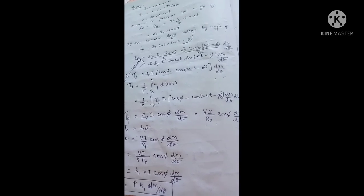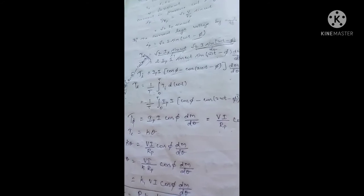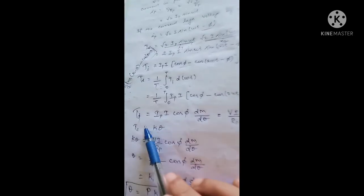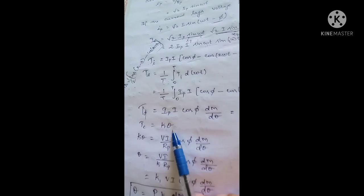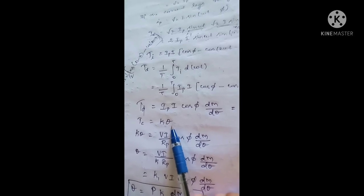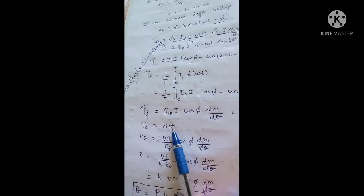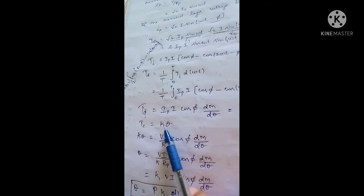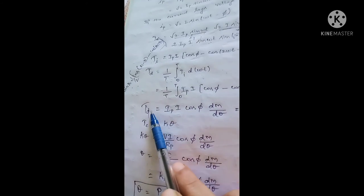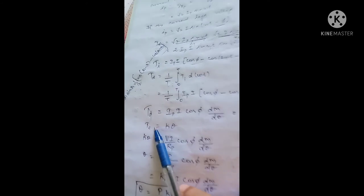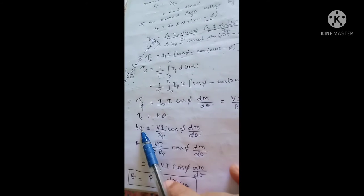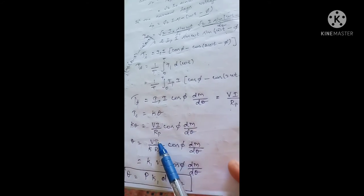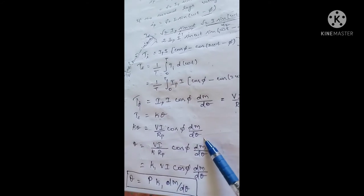Once the deflecting torque is balanced by the controlling torque, the pointer will come to a steady position. The controlling torque equation is Tc = k · θ, where k is the spring stiffness and θ is the deflection of the pointer. Equating: k · θ = (V · I / Rp) · cos φ · dM/dθ.